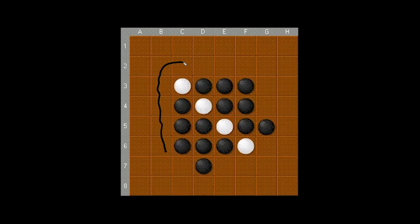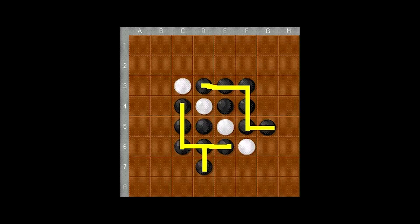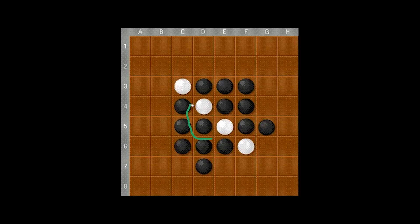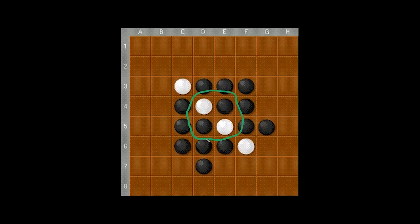A frontier disk is any tile that is touching an open square. So all of these tiles that are on the outside of the current board. Black's frontier disks are here in yellow. And then white's frontier disks are in red. And an interior disk is any disk that is not touching an open square. So these ones right here in the center.